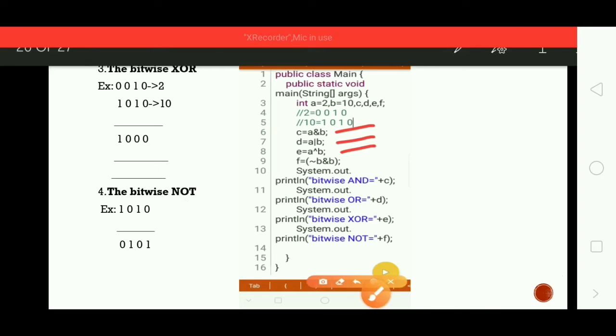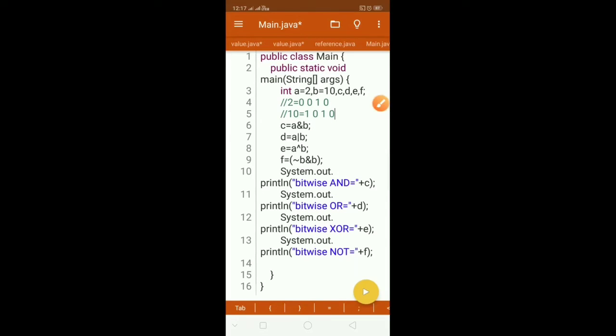This is how we can calculate. Now I will explain bitwise logical operators with an example Java program. Here we have four operations: bitwise AND operator, bitwise OR operator, bitwise XOR, and bitwise NOT operator, performed on two integer types.